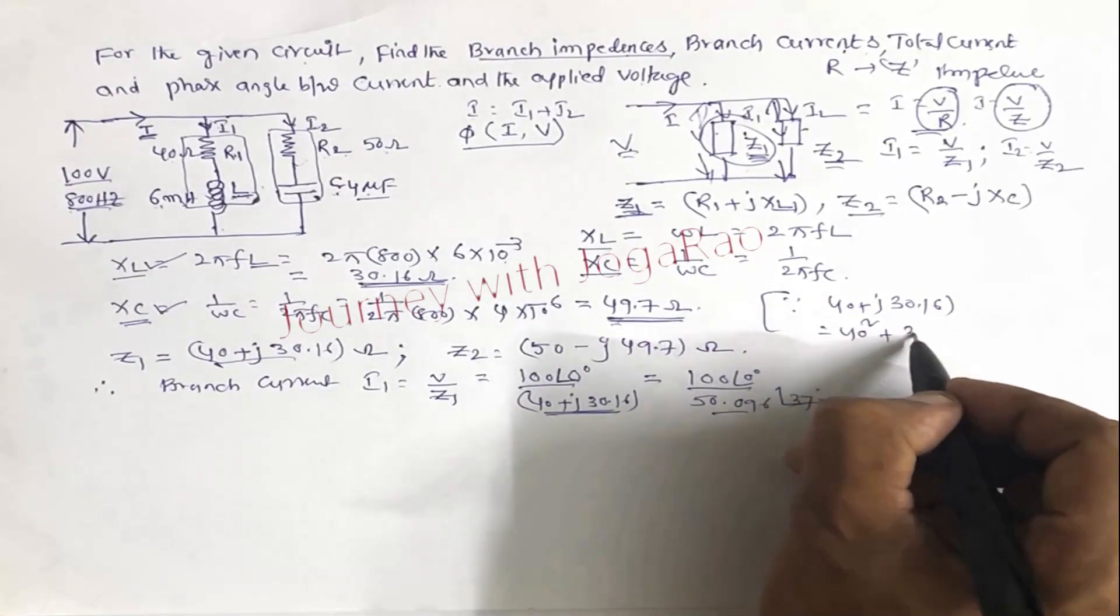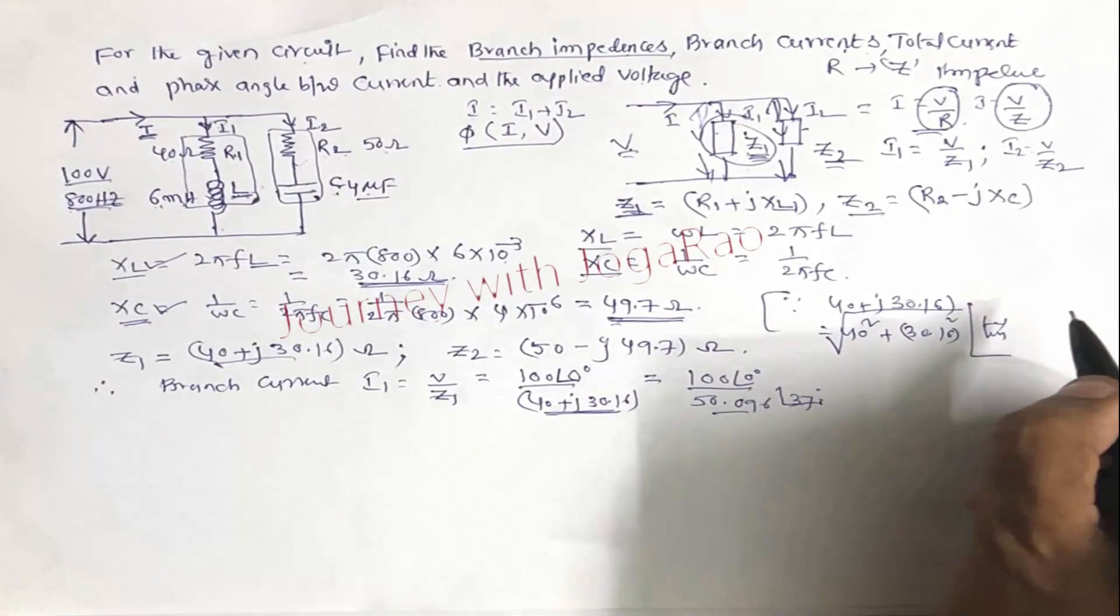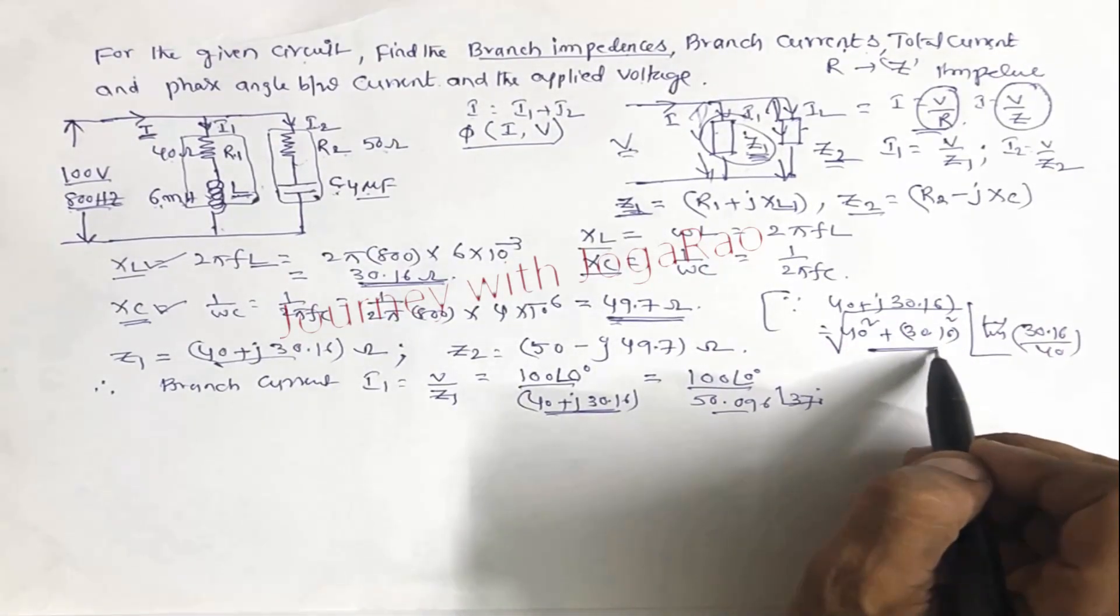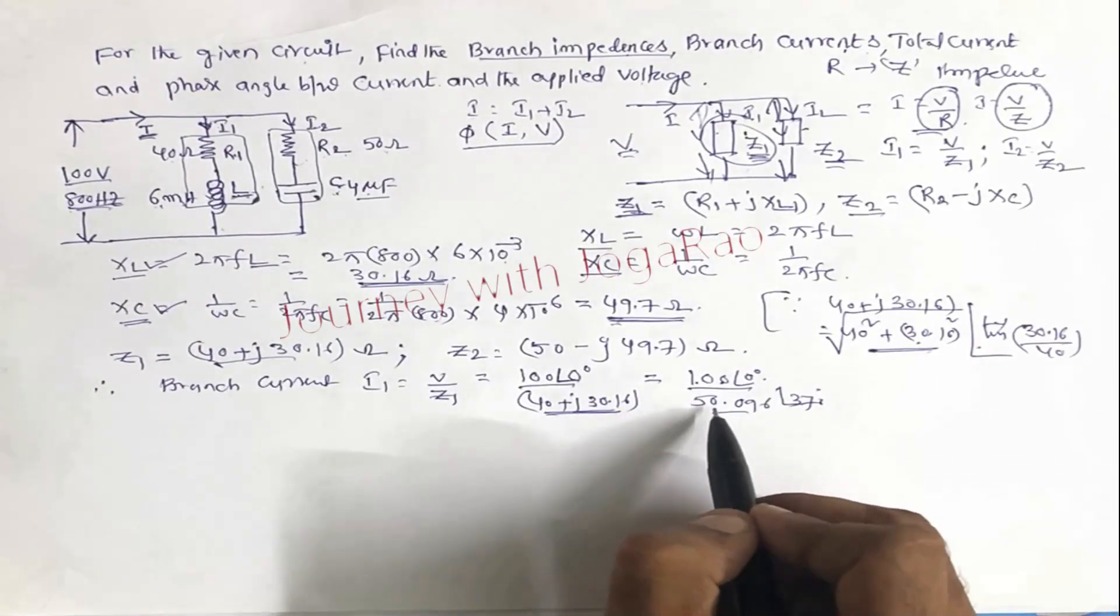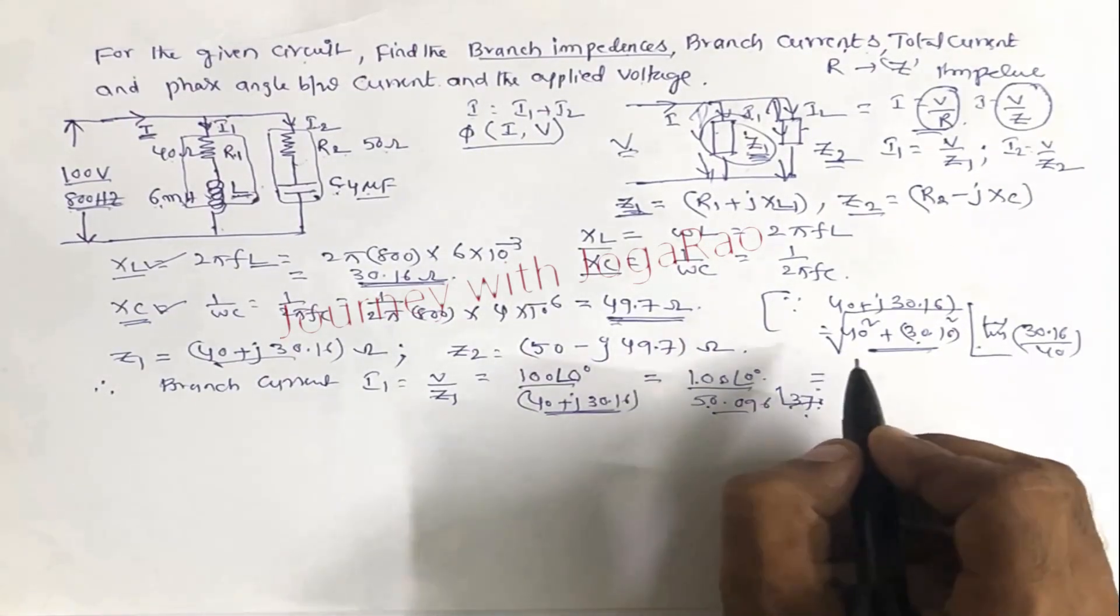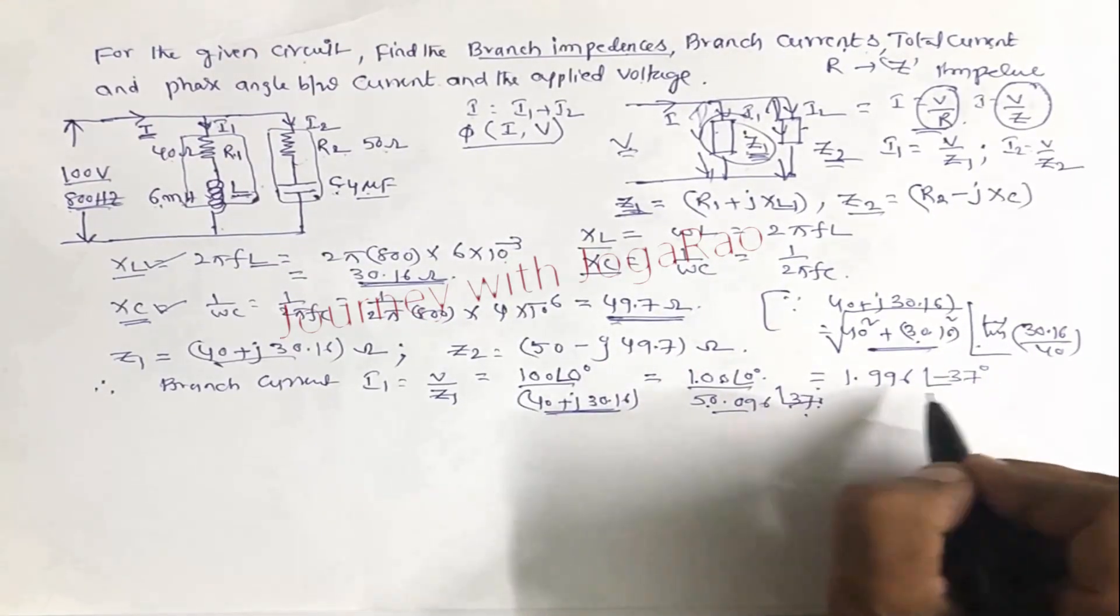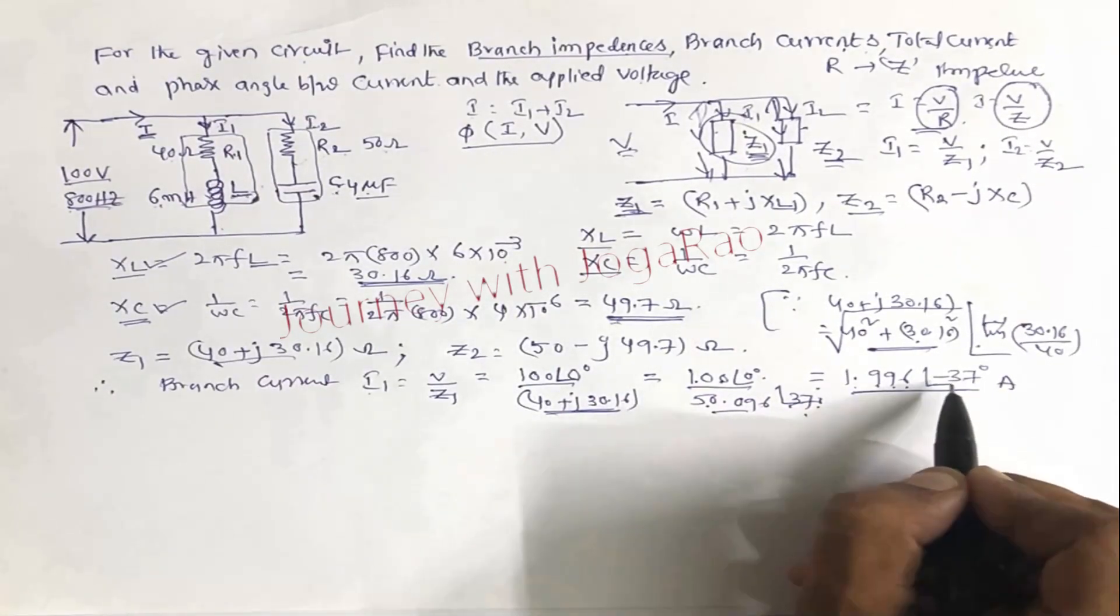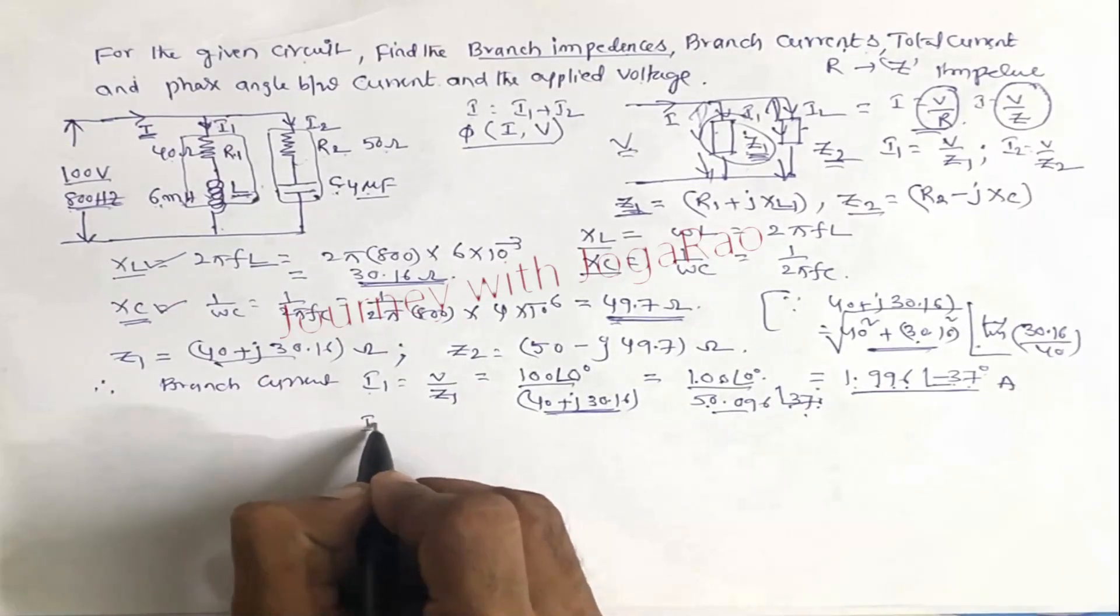Then simplify it. 100 at an angle 0 degrees by polar formula 50.096 at an angle 37 degrees. 40 square plus 30.16 whole square under root. The angle is tan inverse y by x, 30.16 by 40. Use a scientific calculator to simplify. This is 1.996 at an angle minus 37 degrees amperes. So i1 is equal to 1.996 at an angle minus 37 degrees amperes.